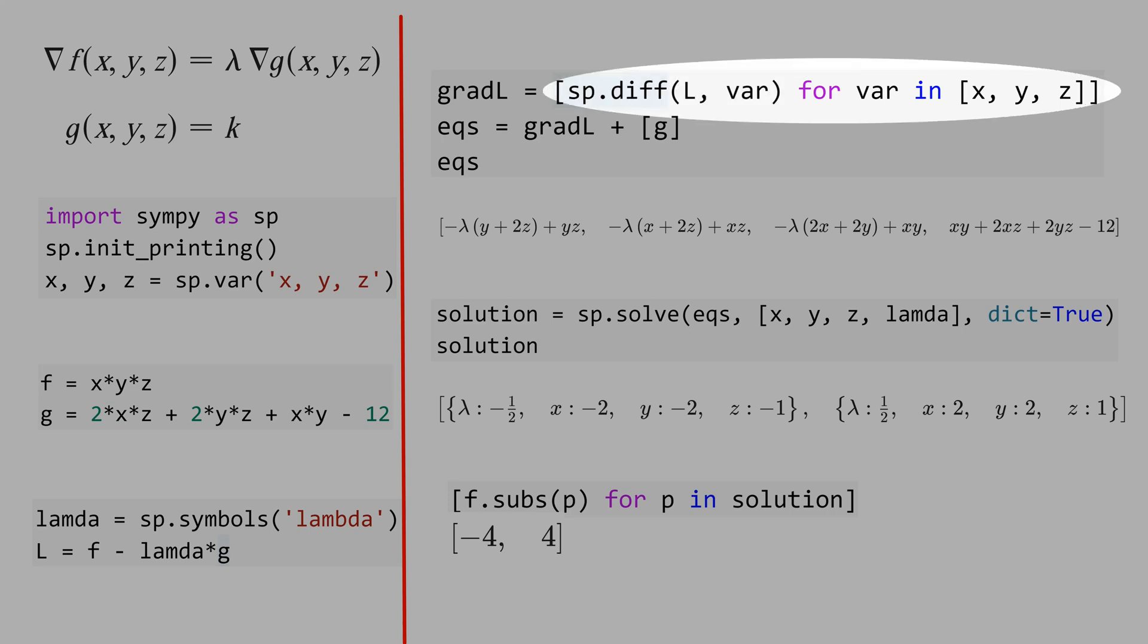This code here represents this system of equations. And for our system of equations, you have to add g, that is the constraint, this equation here. This vector notation is these three equations here, and the fourth equation is the constraint.